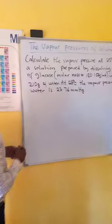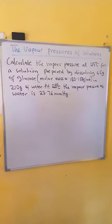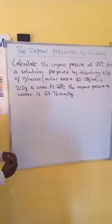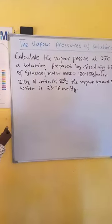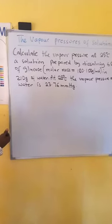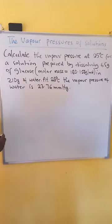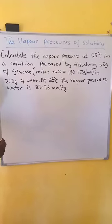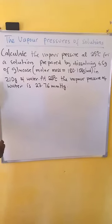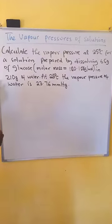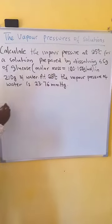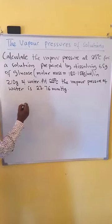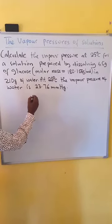We want to see how we can calculate the vapor pressure of a solution using Raoult's Law. Example: calculate the vapor pressure at 25 degrees for a solution prepared by dissolving 65 grams of glucose, molar mass 180.156 grams per mole, into 210 grams of water. At 25 degrees, the vapor pressure of water is 23.76 mmHg.